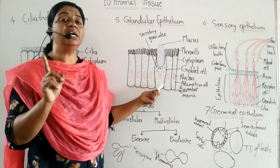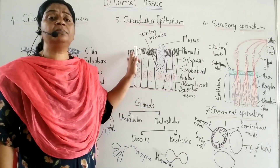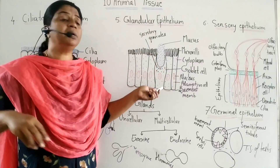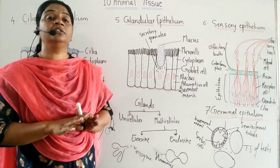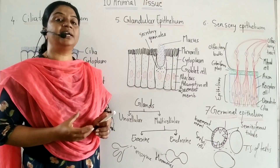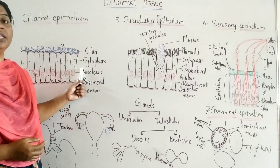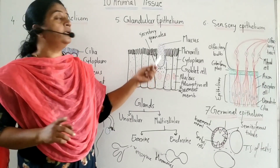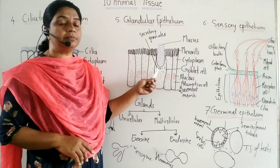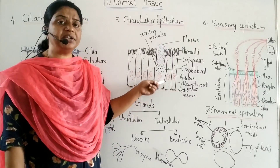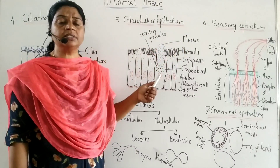Glandular epithelium cells are single and columnar, cuboidal, or pyramidal in shape. Goblet cells are scattered throughout. They have an oval-shaped nucleus present at the base. They have secretory granules which secrete mucus. The upper margin ruptures and secretes mucus.